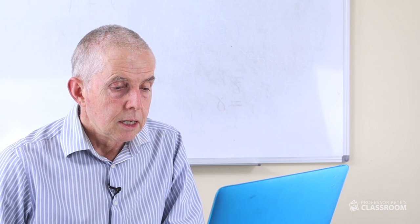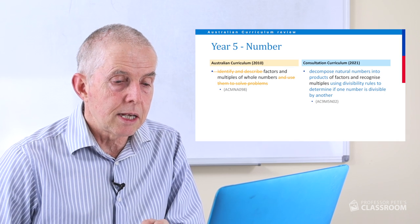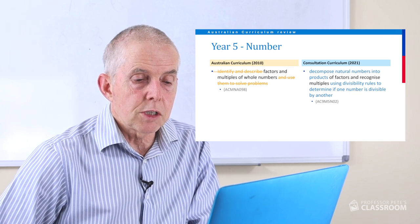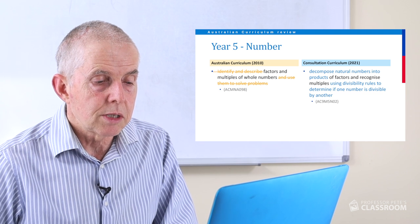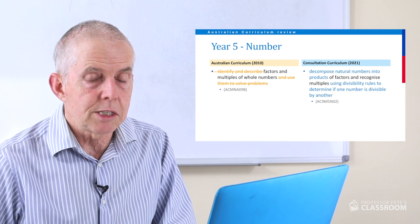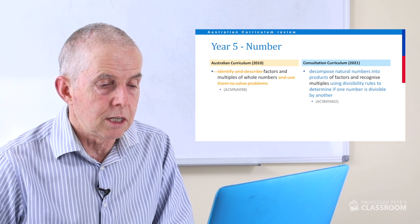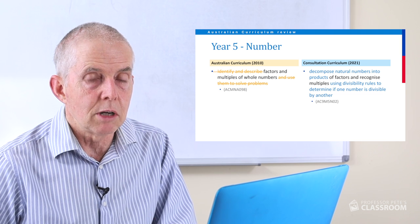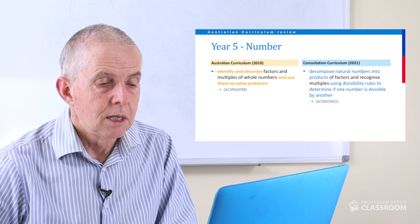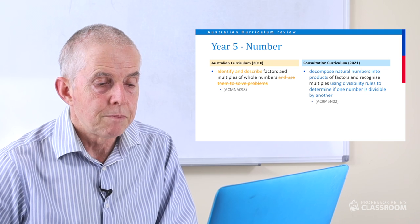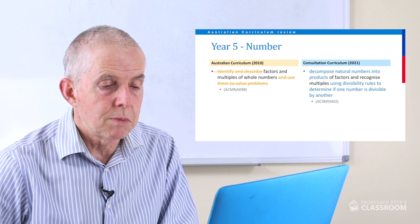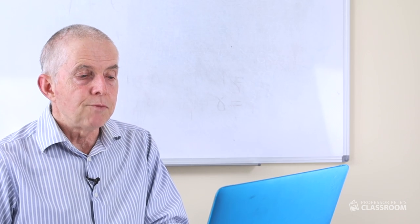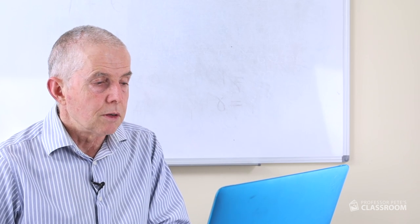The second content descriptor refers to factors and multiples and divisibility rules. This is really good content — it's really useful. We decompose natural numbers, that means the positive whole numbers, into products of factors, and recognise multiples using divisibility rules. This is very, very good.